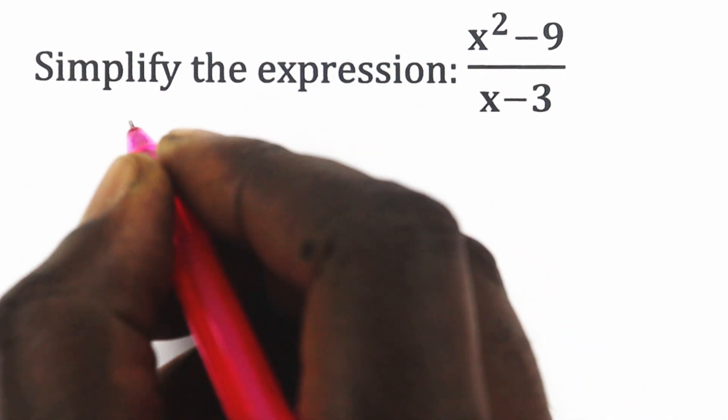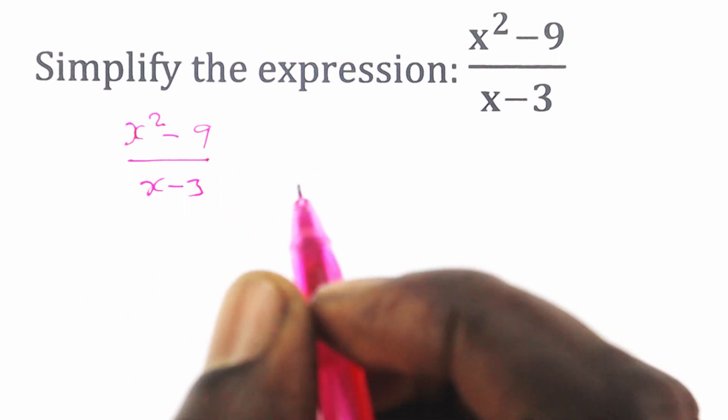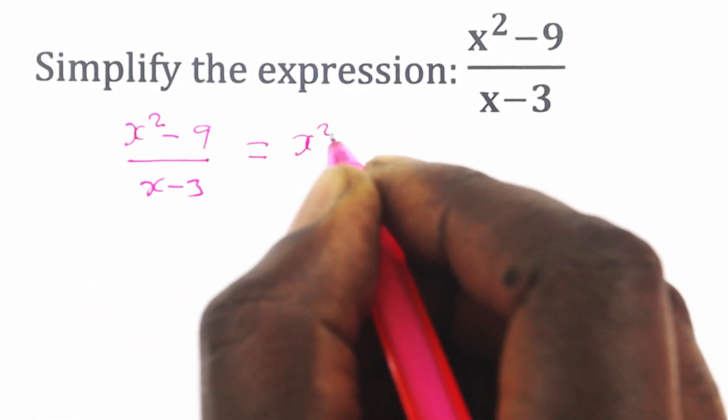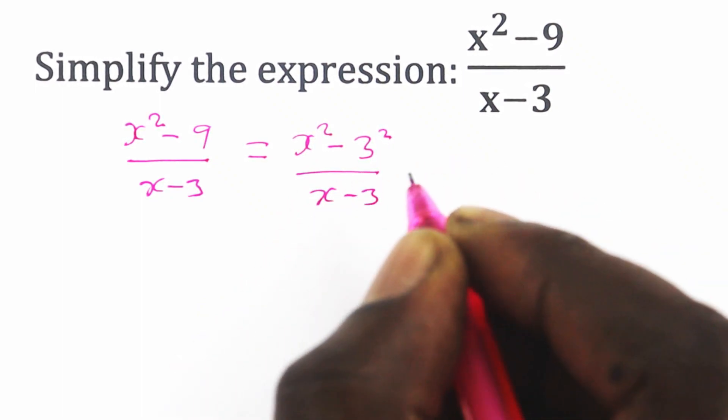We have x squared minus 9 over x minus 3. We can actually rewrite the numerator as x squared minus 3 squared over x minus 3.